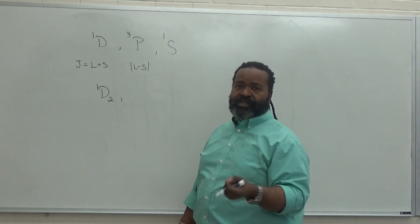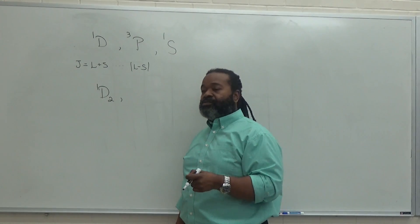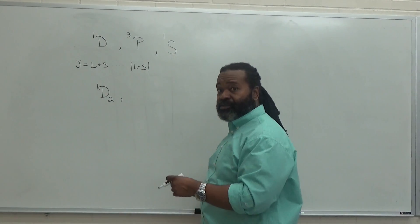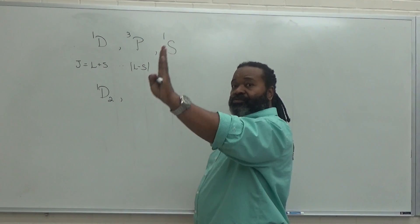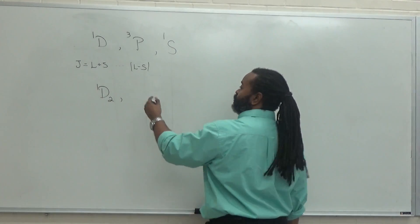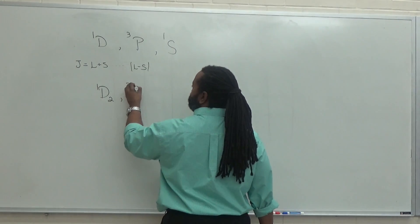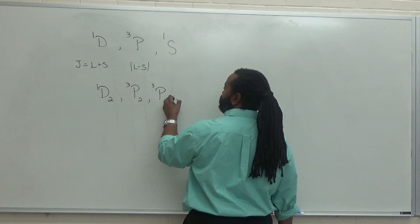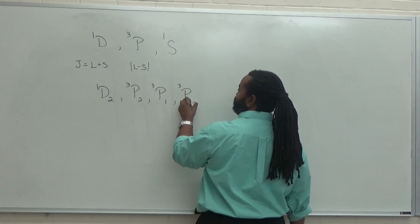For the triplet P, your L equals one and your S equals one. So L plus S would be two. L minus S is zero. So we have three possibilities. We can go from two to one to zero. So we have triplet P2, triplet P1, and triplet P0.